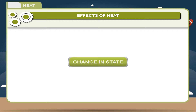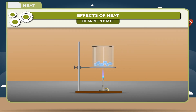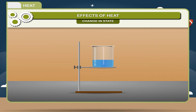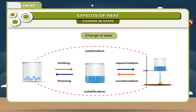Change in State: There are three states of matter — solid, liquid and gas. When a body is heated, there occurs a change in its state. On heating, a solid changes from solid to liquid. When this liquid is further heated, it starts boiling and changes to gaseous state. Conversely, when a material in its gaseous state is cooled, it loses heat energy and changes to liquid state. On further cooling, it changes to solid state. The change of a substance from one physical state to another is called change of state. The effect of heat is summarized in the form of a flow chart as shown here.